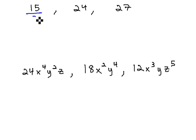We can divide 15 by 3, 24 by 3, and 27 by 3, and we end up getting whole numbers. 15 divided by 3 is 5, 24 divided by 3 is 8, 27 divided by 3 is 9.